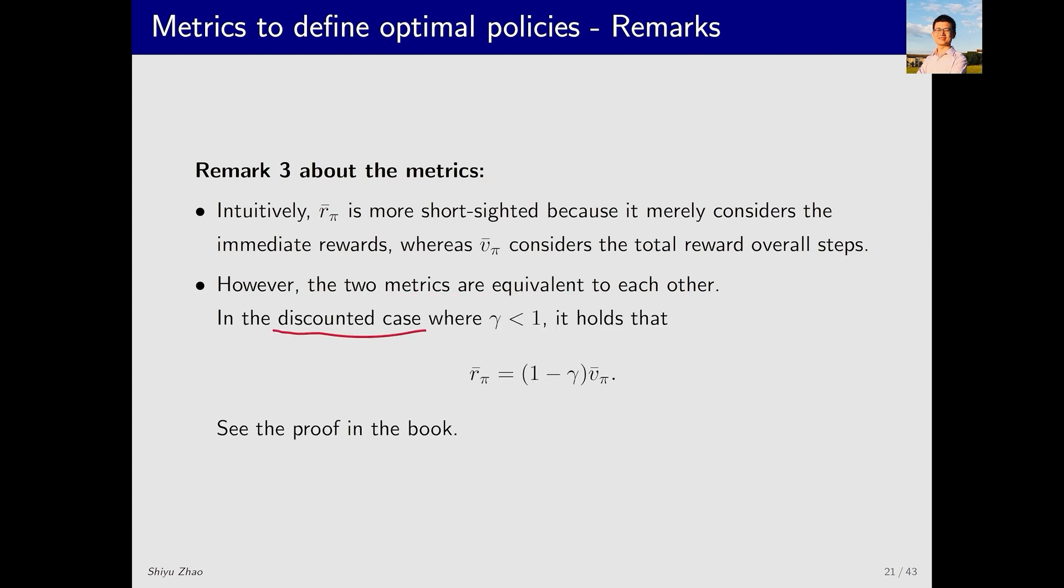In the discounted case, we can prove that r̄_π equals (1-γ) times v̄_π. Note that when I say equivalent, I don't mean that they are exactly the same. Rather, I mean that they satisfy this equation, which means that they will be optimized simultaneously. That is, when you optimize one of them, the other will also reach its optimum. For the proof of this equation, you can refer to my book.